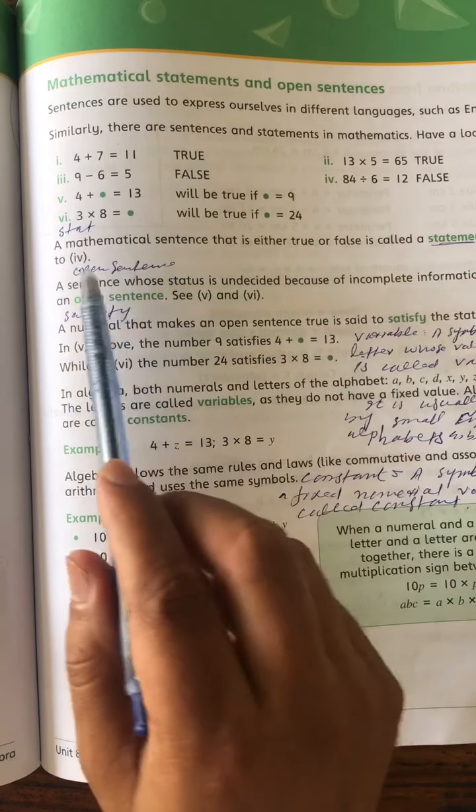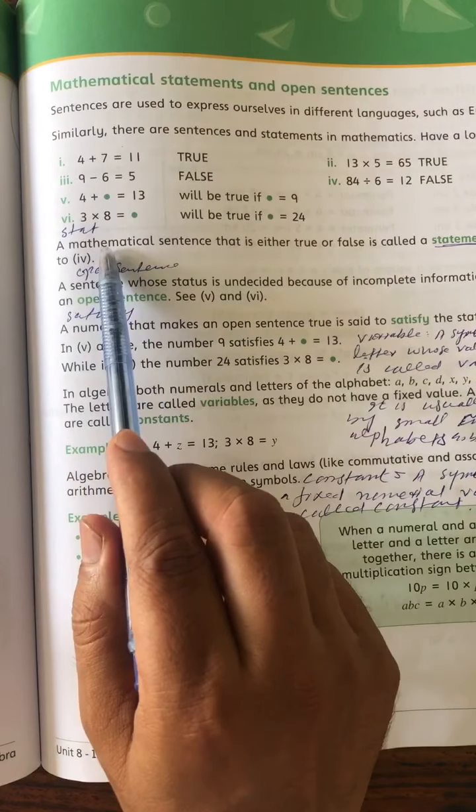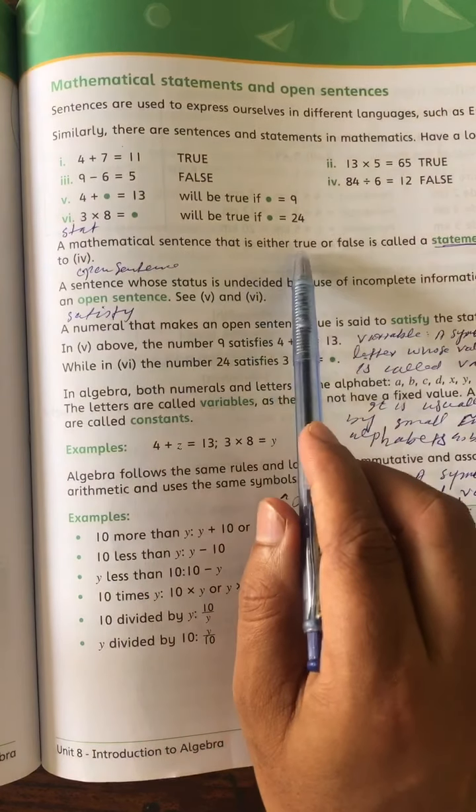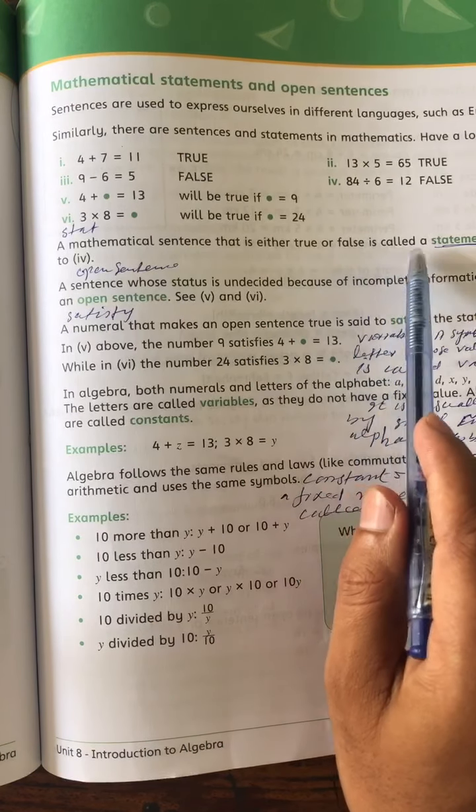Statement: A mathematical sentence that is either true or false is called a statement.